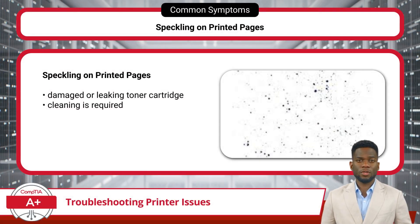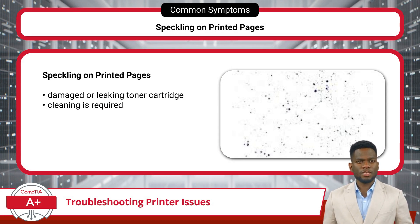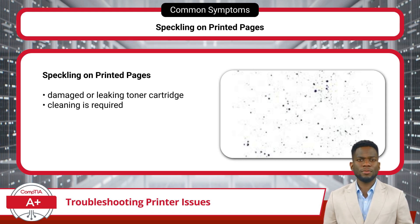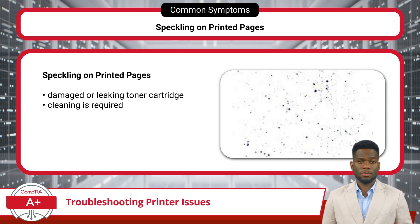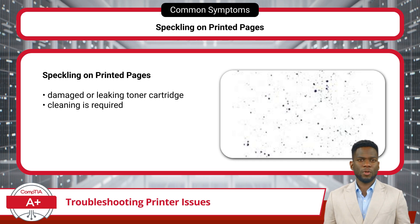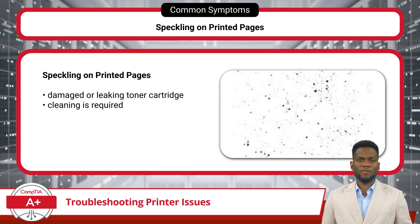When speckling appears on printed pages, it can significantly reduce overall print quality. This issue often stems from problems with the toner cartridge or insufficient printer maintenance. Examine the toner cartridge for signs of leakage or damage, as leakage can lead to speckling. Accumulated dust, debris, or excess toner inside the printer can also cause speckling. If evident upon visual inspection, thoroughly clean the internal components — including the drum, fuser unit, and paper path — using a toner-approved vacuum and/or a lint-free cloth.